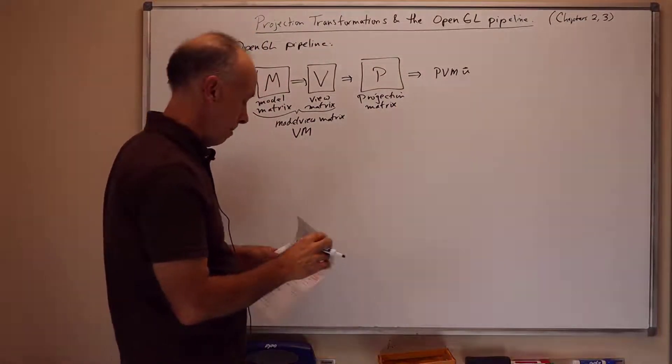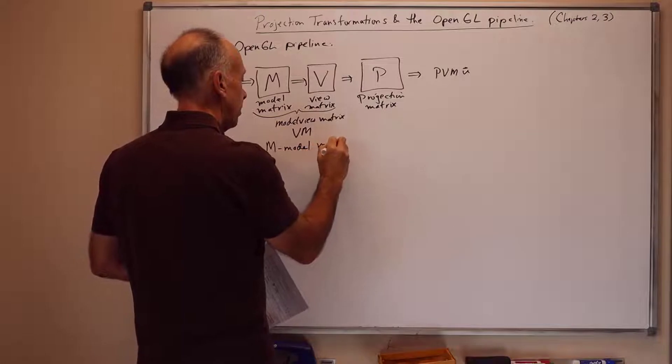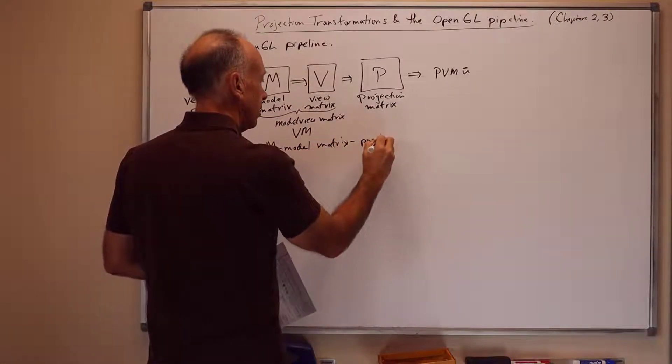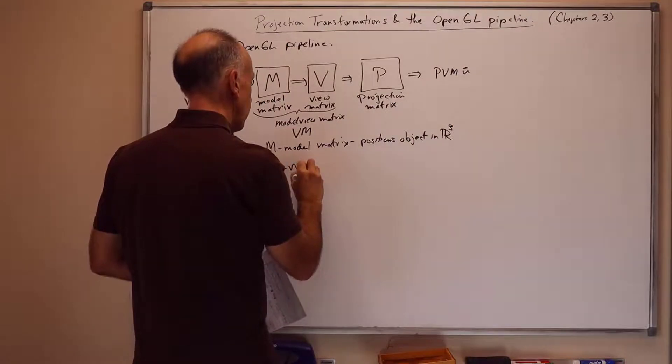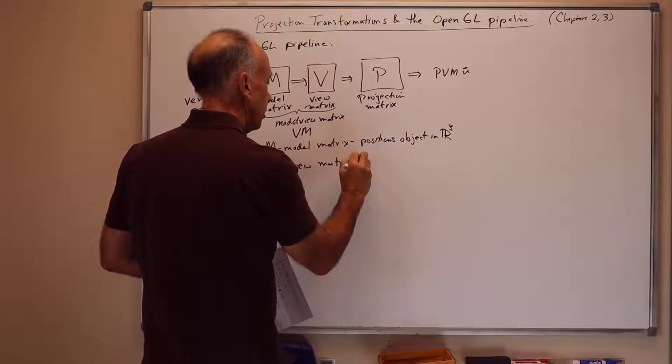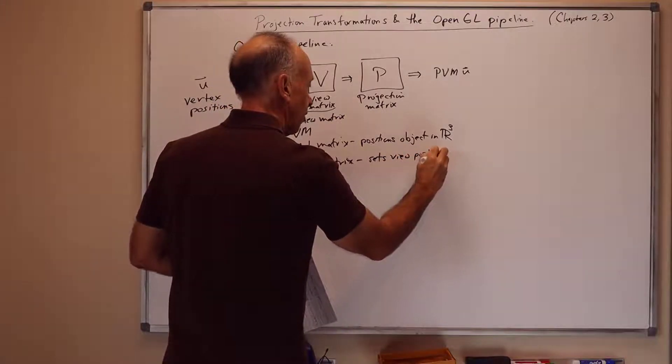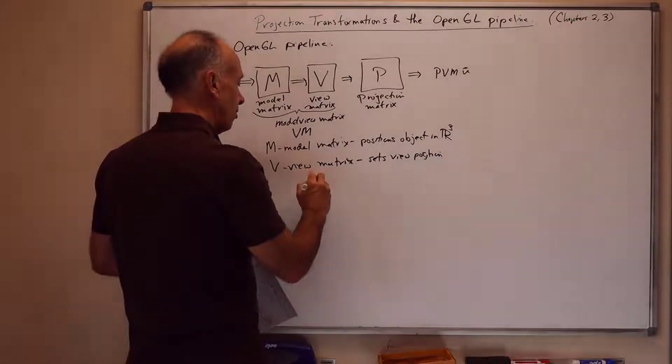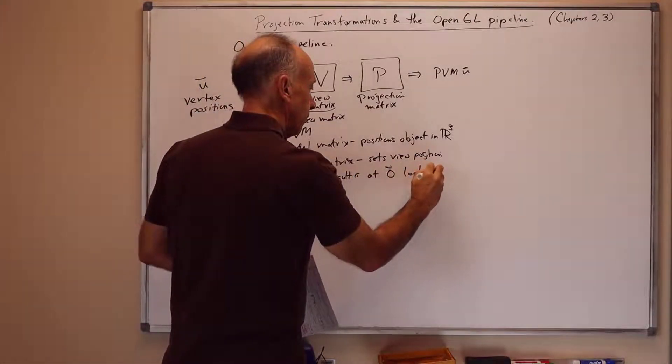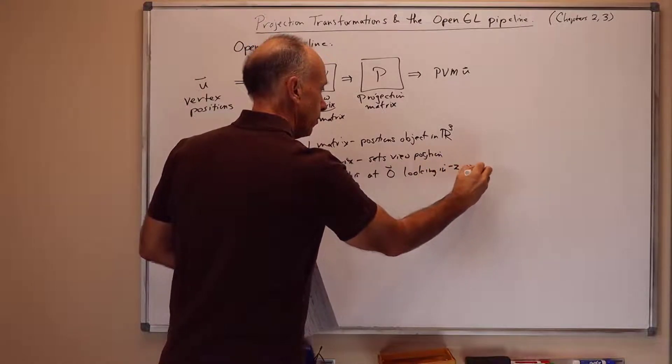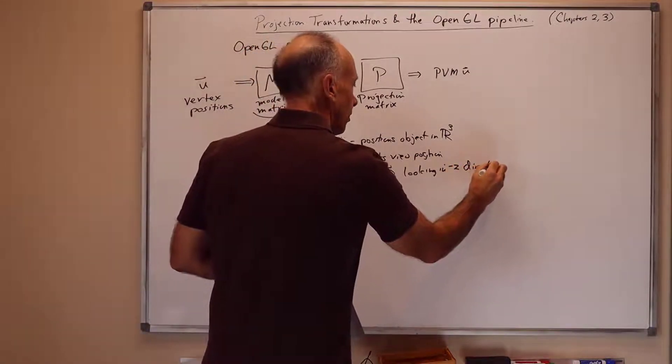The model matrix typically positions objects in 3-space. The view matrix typically sets the viewer position so that we think of the matrix transforming the position of objects to be in front of the viewer. By default, the viewer is at the origin, looking in the negative Z direction, down the negative Z axis.